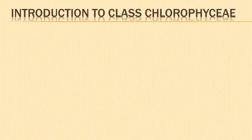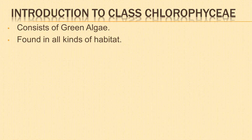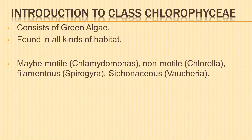Let us start with the introduction to class Chlorophyceae. Class Chlorophyceae consists of green algae. They are the most widely distributed group of algae, found in all kinds of habitats. Members of Chlorophyceae exhibit different variety in form and shape. They may be motile like Chlamydomonas, the simplest form of green algae; non-motile like Chlorella; filamentous like Spirogyra and Ulothrix; siphonaceous like Vaucheria; or palmelloid like Tetraspora.